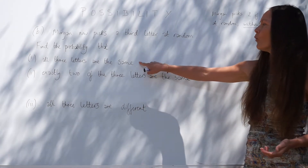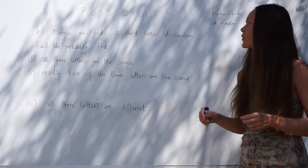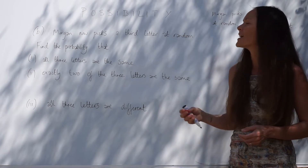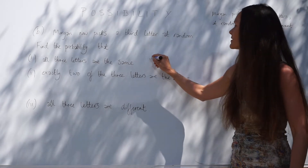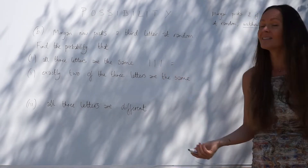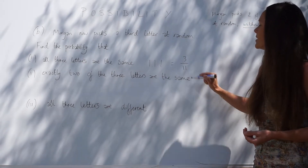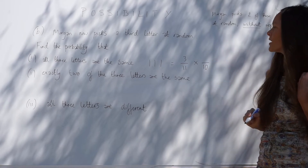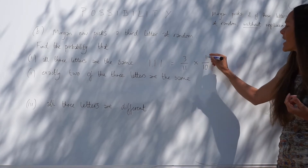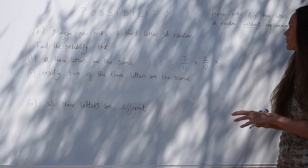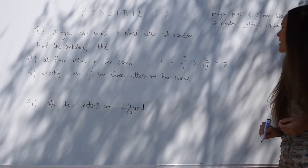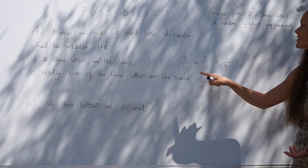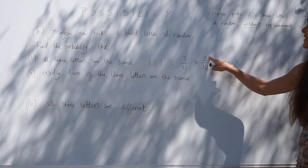On to part B: Morgan picks a third letter at random and we have to find the probability that all three letters are the same. Without replacement, we're only considering the letter I because it's the only letter in this word that occurs at least three times. So the probability of picking I, then I, then I is: 3/11 × 2/10 × 1/9. Multiplying all numerators together gives 6.